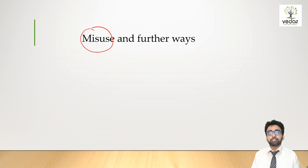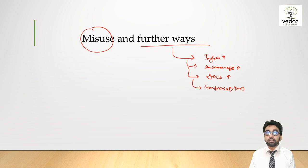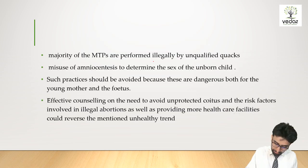You have to spread awareness to the people, increase the infrastructure, increase the doctors' numbers. NCERT is saying you have to tell people about contraception, because if you use contraception, MTP won't be needed at all.